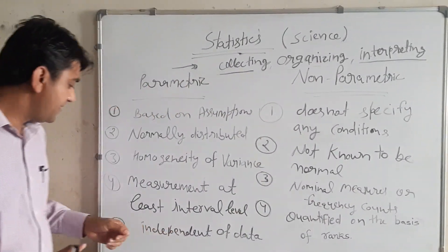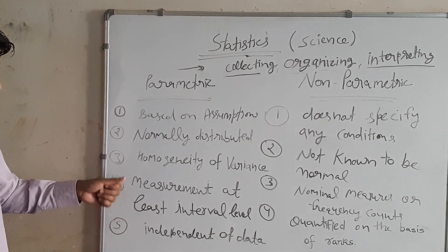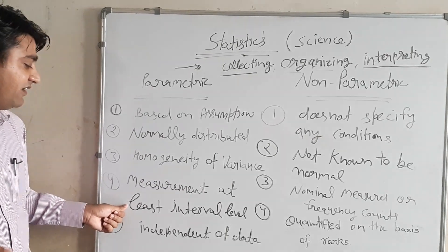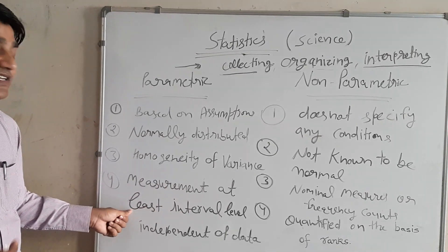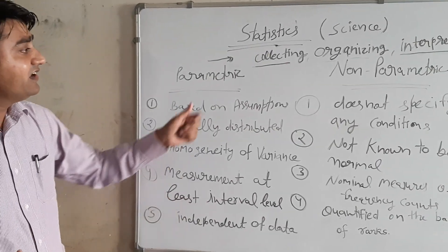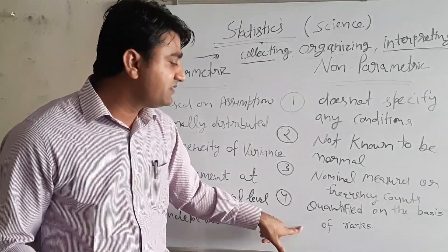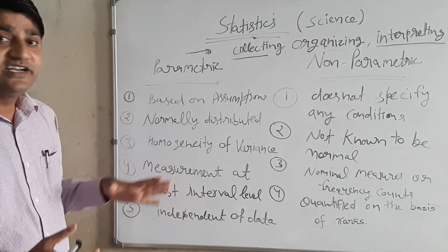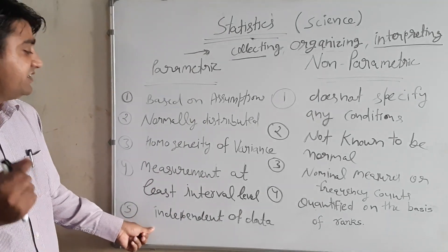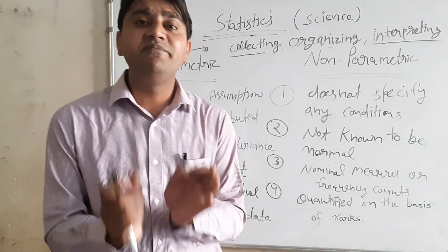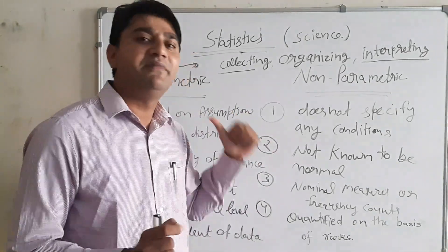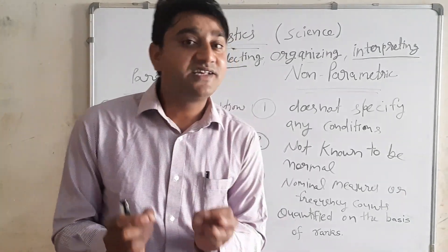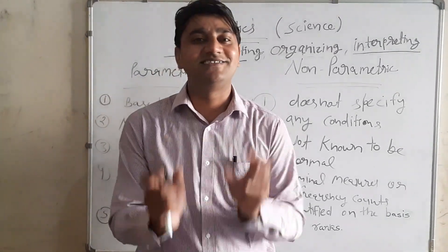Another difference: in parametric statistics, the measurement level should be at least the interval level. In non-parametric statistics, the measurement should be on the nominal level. Also, the data should be independent in parametric statistics, whereas in non-parametric statistics there is no such condition.